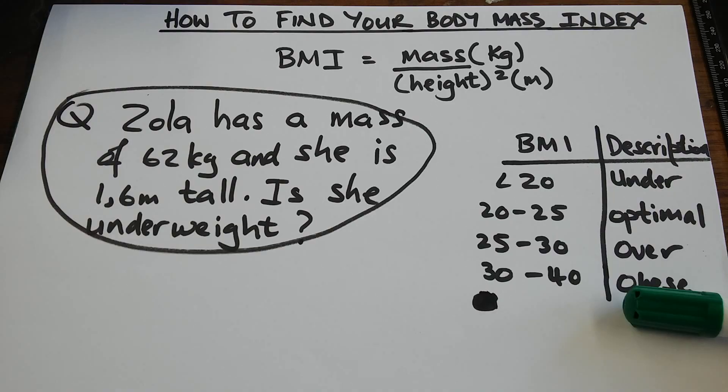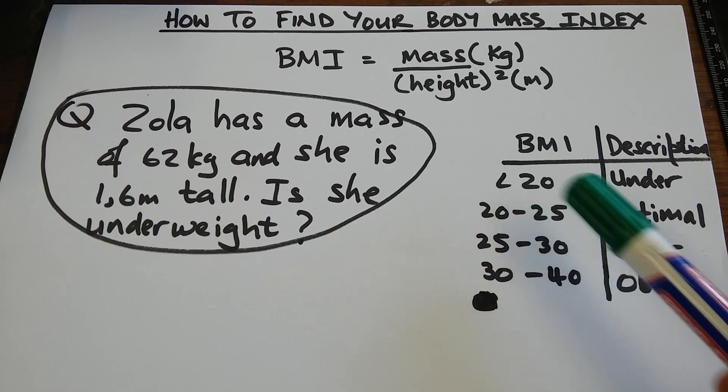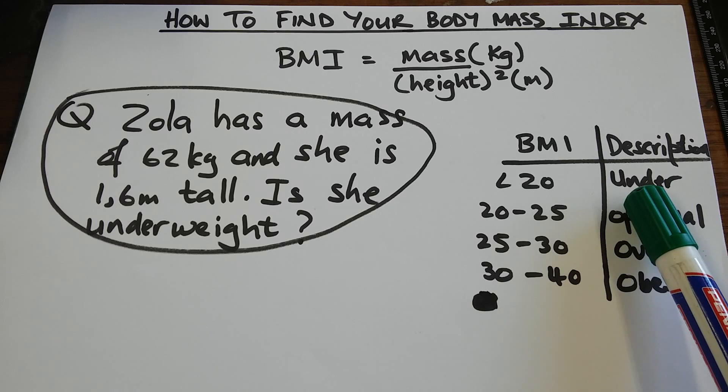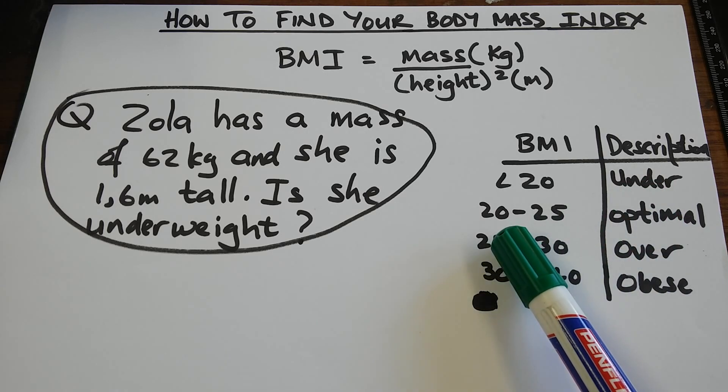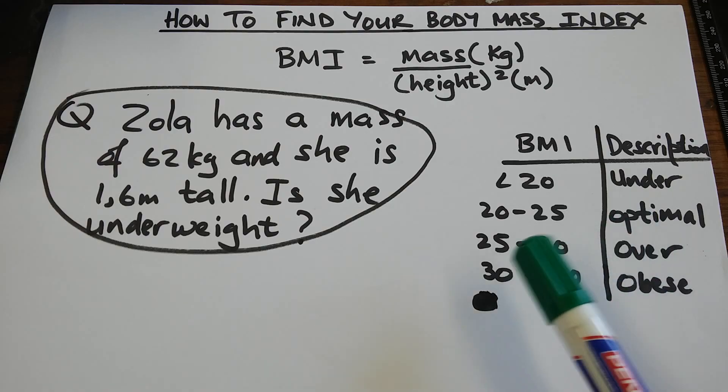We have different categories. If a person's BMI is less than 20, then we say that person is underweight. If the person's BMI lies between 20 and 25, we say optimal weight.